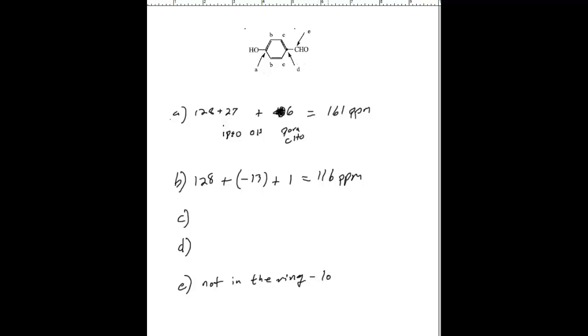So in that case, you just simply look in your book for the type of carbon it is and where that peak should occur at.